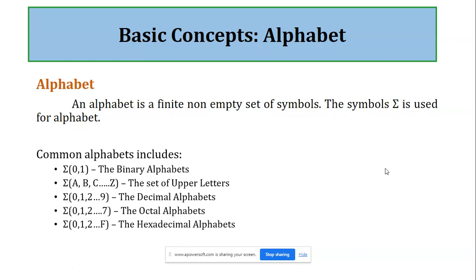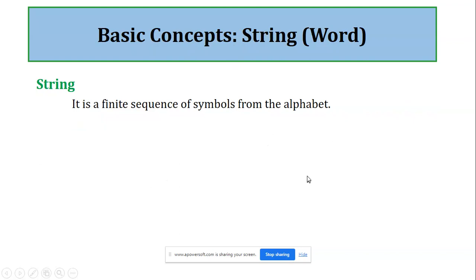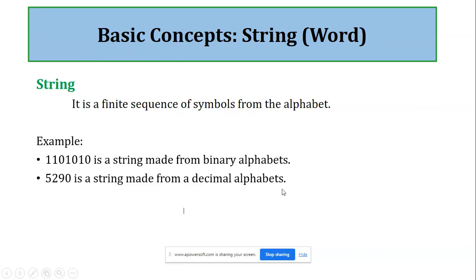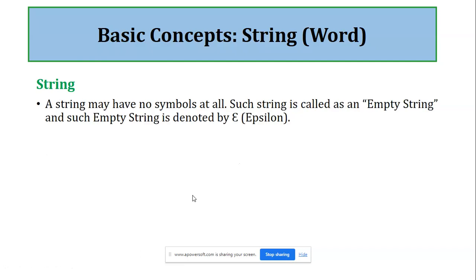Next comes the string. A string is a finite sequence of symbols from an alphabet, and another name for a string is also called a 'word.' For example, if we consider the binary alphabet {0, 1}, we can generate strings as finite sequences of those symbols — that is a binary string. If we take from the decimal alphabets and make a string, it is called a decimal string.